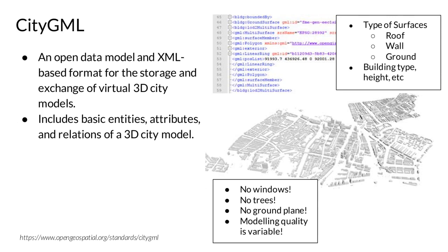CityGML is a standardized format for 3D city models. For the proposed workflow, models saved in the CityGML file format are used. Though city models in other file formats could be used as well, the CityGML file format is preferred as it is an open, standardized, XML-based format. The CityGML format includes semantic information and allows models to be described at varying levels of detail, referred to as LOD. In this research, LOD2 models were mainly used.